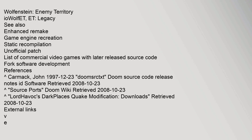Wolfenstein 3D (ECWolf, NewWolf, Wolf4SDL, Wolfenstein 3D Redux, WolfGAL, WolfGAL 3D), Wolfenstein: Enemy Territory (iowolfet, ET Legacy). See also: enhanced remake, game engine recreation, static recompilation, unofficial patch, list of commercial video games with later released source code, fork software development. References: Karmack, John (23 December 1997), Doom's .rctxt Doom source code release notes, id Software, retrieved 23 October 2008.